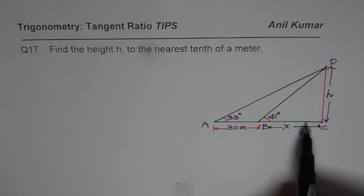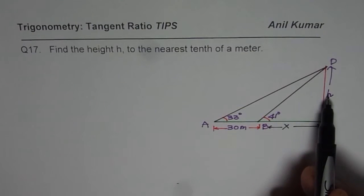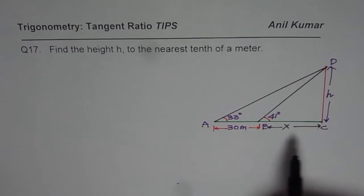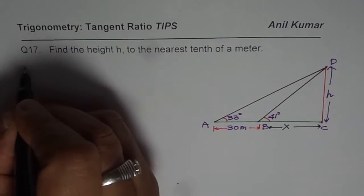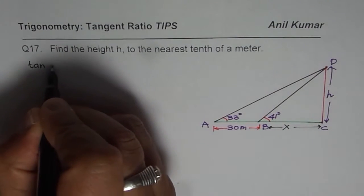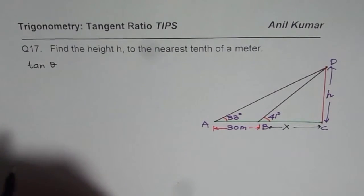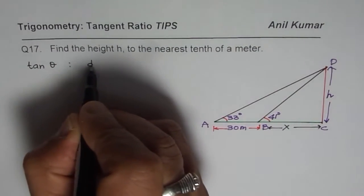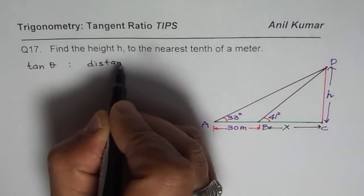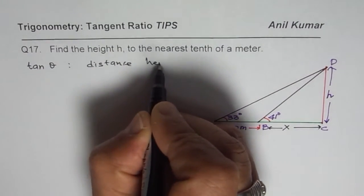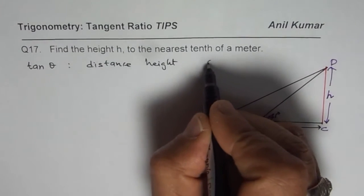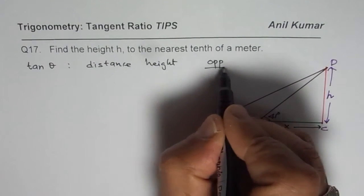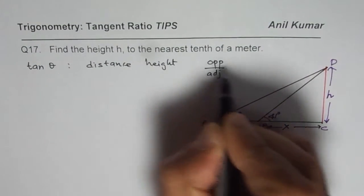In this particular case we are talking about distance and height, which clearly indicates we are talking about tan ratios. So remember one thing: tan ratio, or tan θ in general, will be used for distance-height problems, or when we are talking about opposite over adjacent. That is tan ratio.